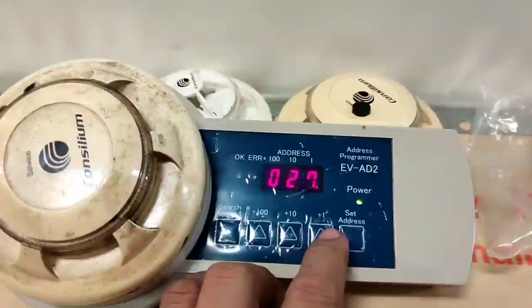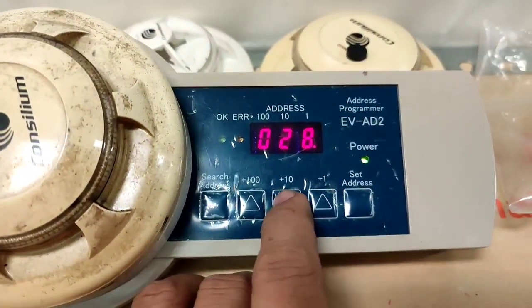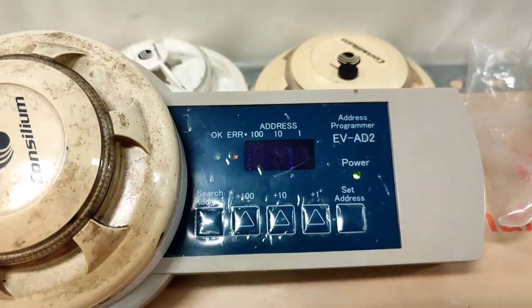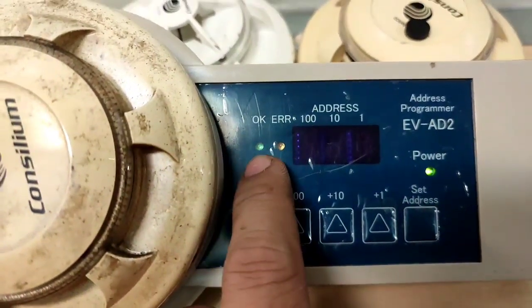That's why loop to 27. Since 27, you can add plus one, plus ten, plus one hundred. Okay, set address.